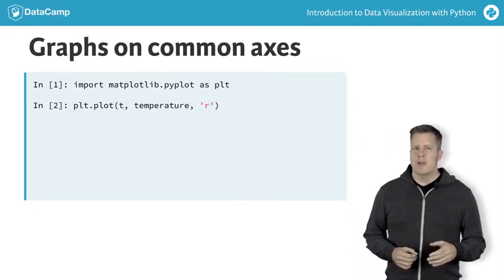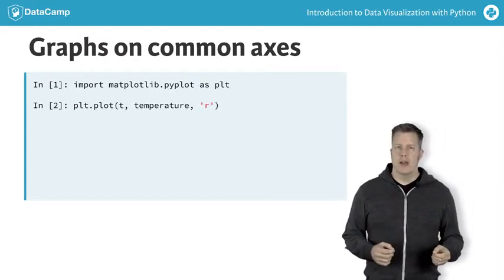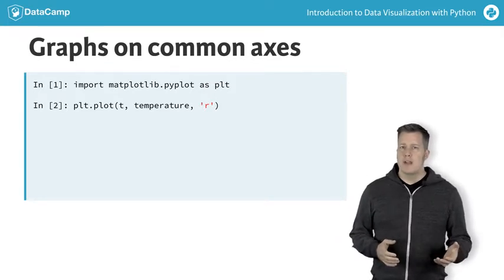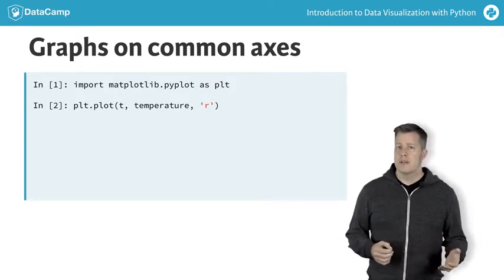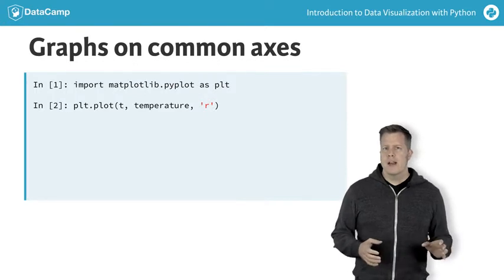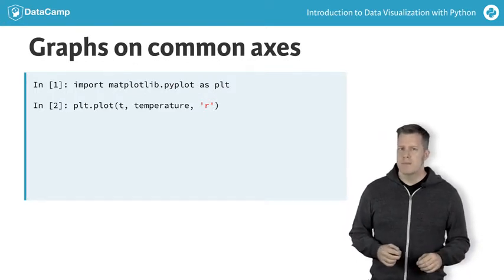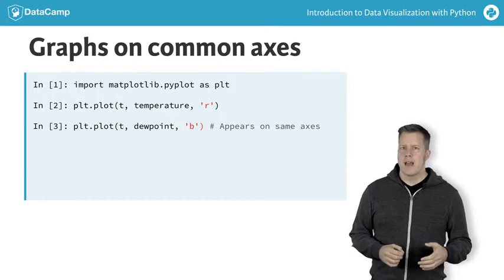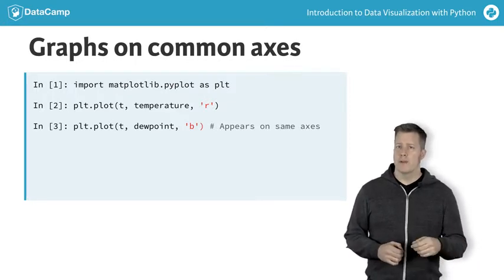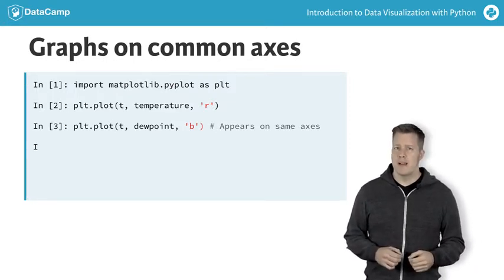The first plot command plots temperature versus T in red. The arguments to plot can be NumPy arrays, lists, or pandas series. The curve is not actually drawn yet, just created in memory. The second plot command issued in sequence actually overlays a curve of dewpoint versus T in blue on the same axes.